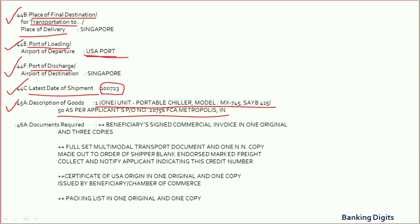Field 46A is the documents required field, which refers to what documents need to be presented under the LC and how many originals or copies are required to be presented.